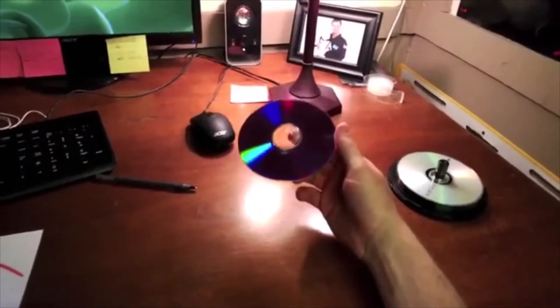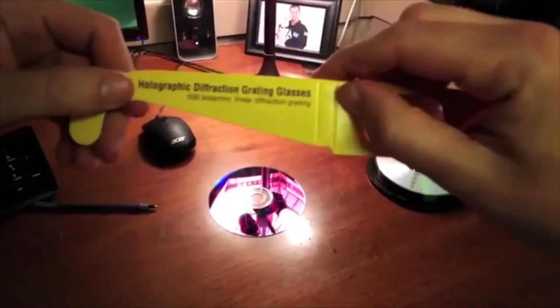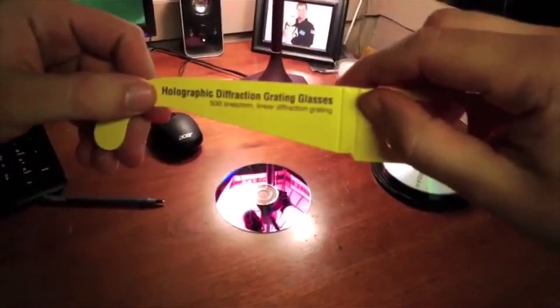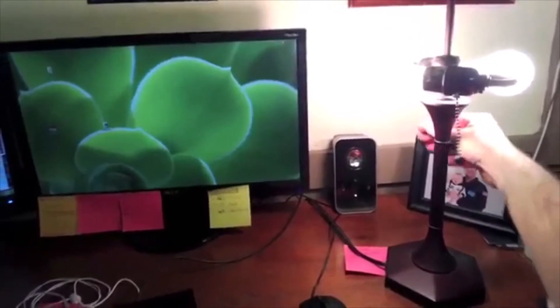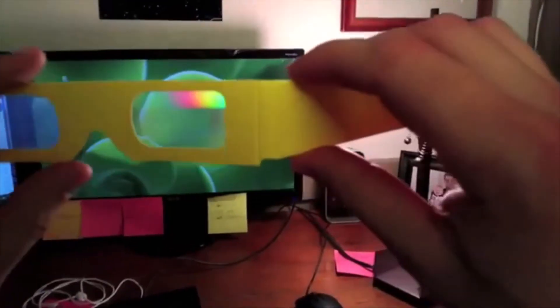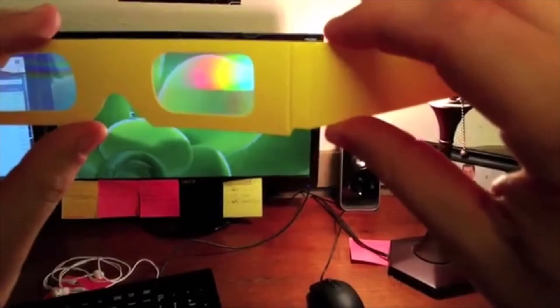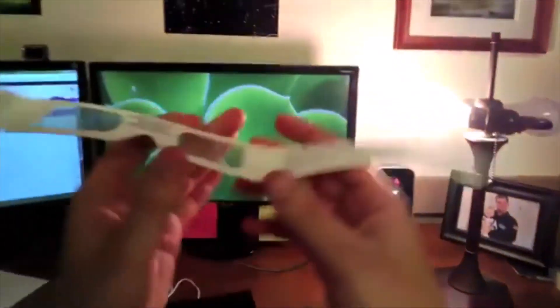There are other things that diffract light as well, like these holographic diffraction-grating glasses. If I was to look at this bright light through the diffraction glasses, I'd actually see the same kind of rainbow. In fact, let me try these glasses on.